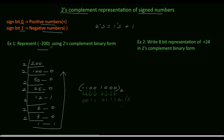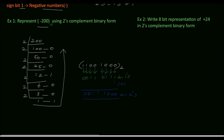Now add 1 to the 1's complement to get the 2's complement. 1 plus 1: sum is 0, carry 1. 1 plus 1: sum is 0, carry 1. 1 plus 1: sum is 0, carry 1. The result is 00111000, which is the 2's complement of the binary number.